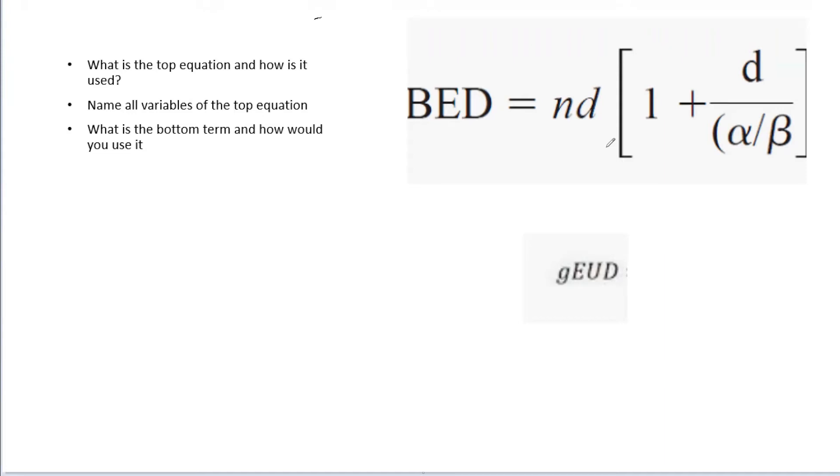This is often done by physicians to determine what they may want to use, but could also be beneficial for a physicist as well to either double check them or do our own calculations. So D here is the dose per fraction, and this is in centigrade or gray, could be either one.